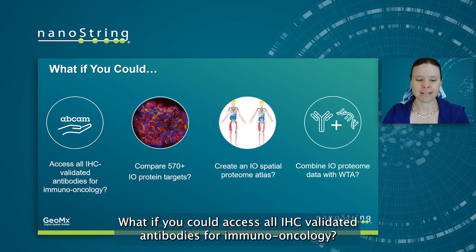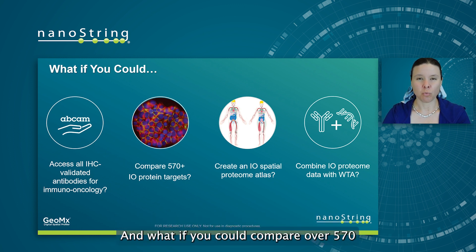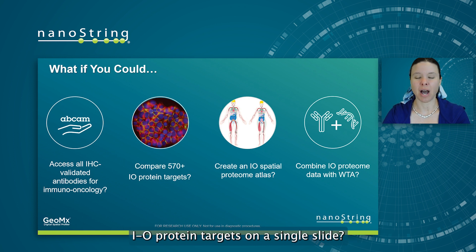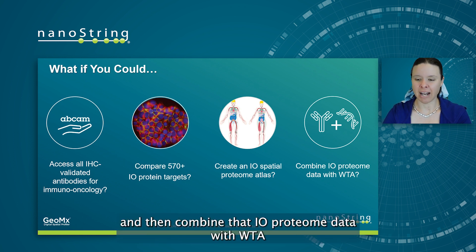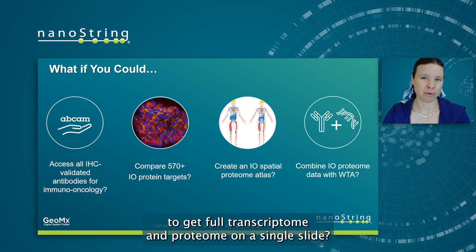What if you could access all IHC-validated antibodies for immuno-oncology? And what if you could compare over 570 IO protein targets on a single slide? What if you could create an IO spatial proteome atlas and then combine that IO proteome data with WTA to get full transcriptome and proteome on a single slide?